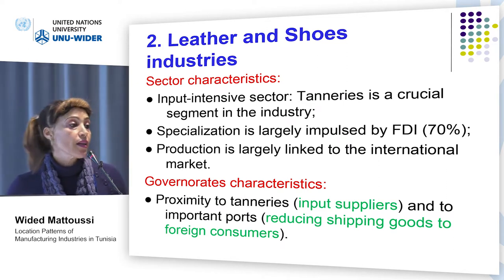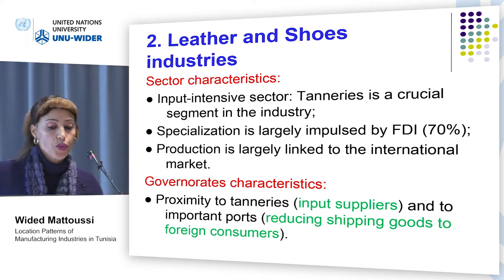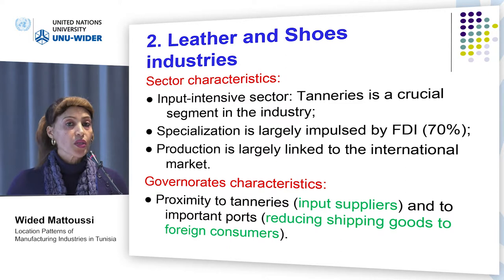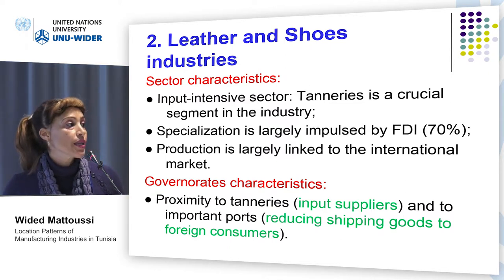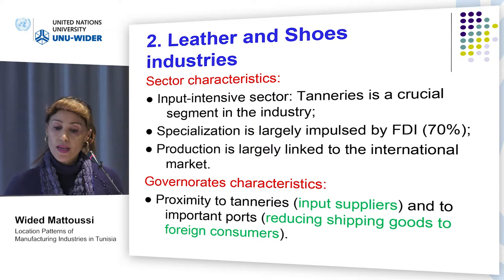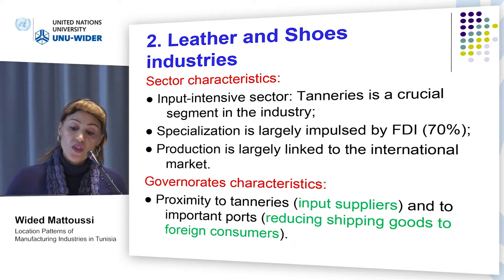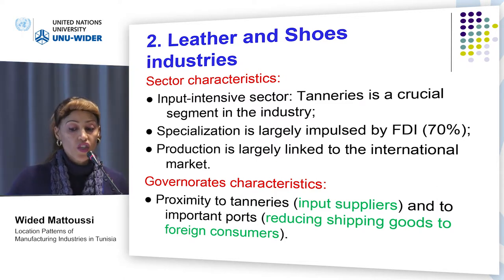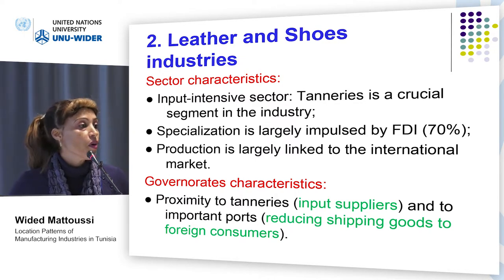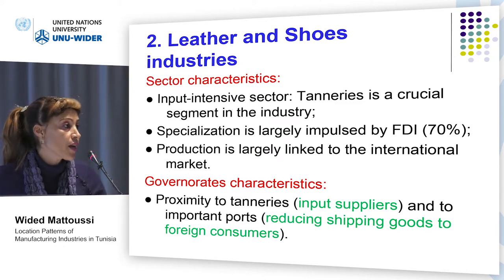Now let's move to the second sector, leather and shoes industries. This sector is largely dependent on tannered leather, so tanneries is a crucial segment in the industry. Specialization is largely impulsed by foreign direct investment in the proportion of 70 percent, according to Karai and Dries. Moreover, the Tunisian production is largely linked to the international market. Indeed, more than 95 percent of firms export 100 percent of their output.